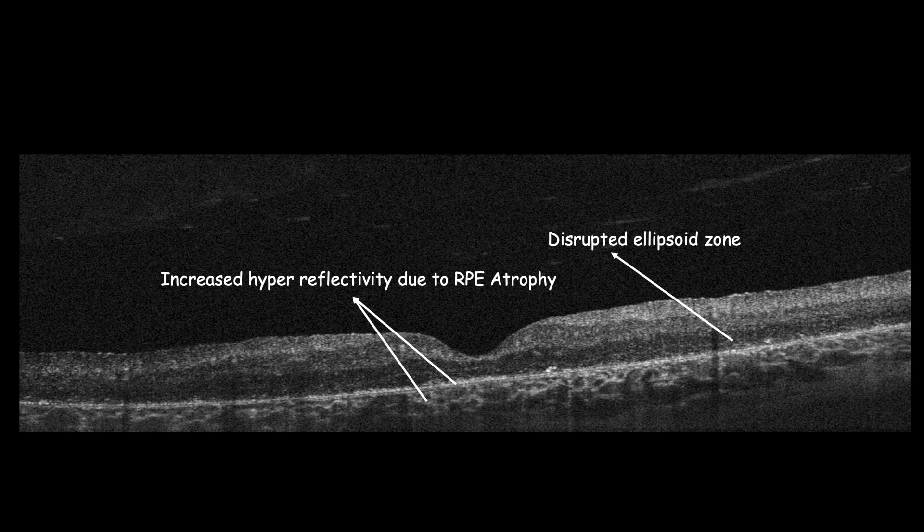This is an example of RPE atrophy due to cone-rod dystrophy. This patient has a best-corrected visual acuity of hand motion due to cone-rod dystrophy, which can be autosomal recessive, dominant, or X-linked. Patients usually suffer from dyschromatopsia and photophobia. In late stage, cone-rod dystrophy can cause legal blindness.